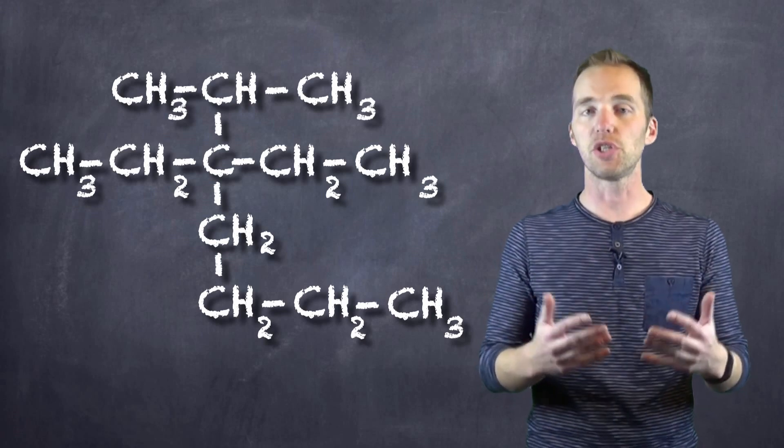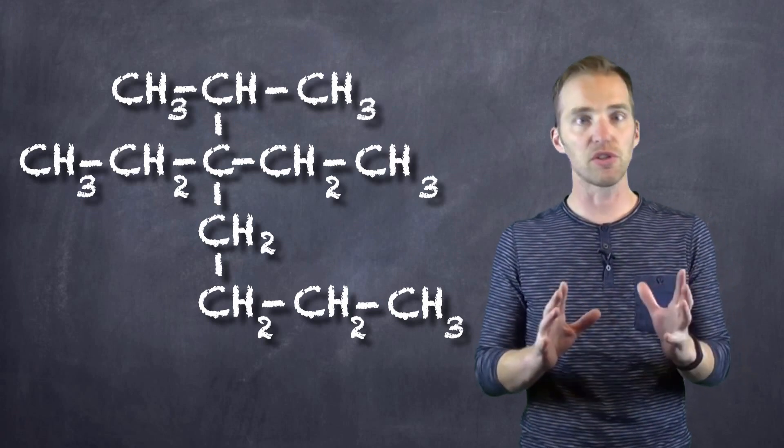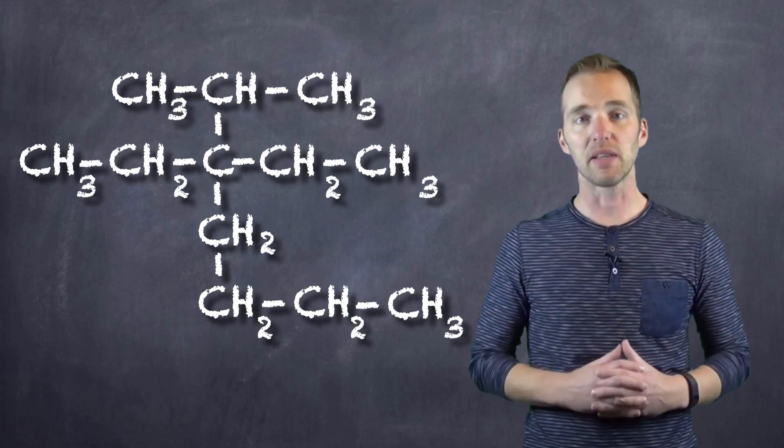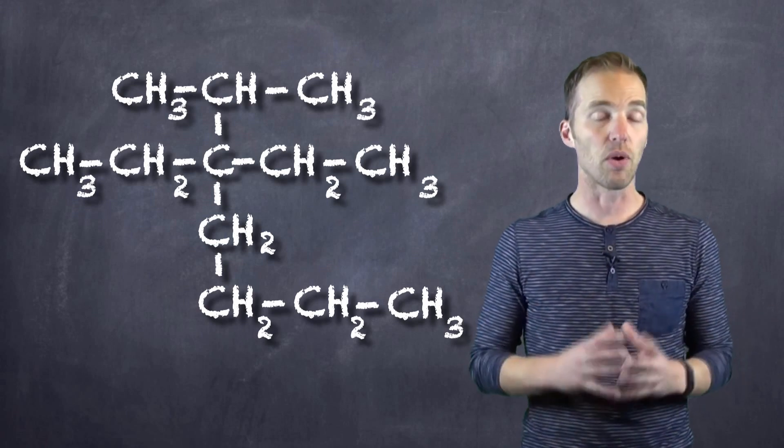So let's take a look at our first step, and remember, that is to identify the longest continuous chain, or as I call it, the parent chain. Now we have to be careful here, because if we just look at the straightest one, the one that goes right through the middle, we might predict that this is a five carbon branched chain alkane, or a pentane.